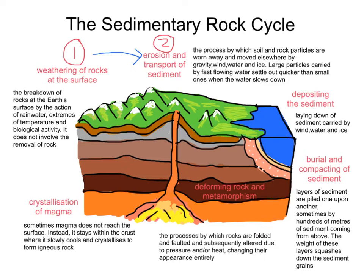What we observe is that large particles carried by fast-flowing water settle out much quicker than small ones when the water starts to slow down. That leads us into the next stage in the sedimentary rock cycle: deposition, or depositing that sediment. Depositing the sediment is stage three. Deposition basically means to deposit, or drop, all of this material. Particles fall due to gravity forming sediment. In water, the most dense particles fall to the bottom first, followed by the less dense particles, and layers of different sediments start to form.